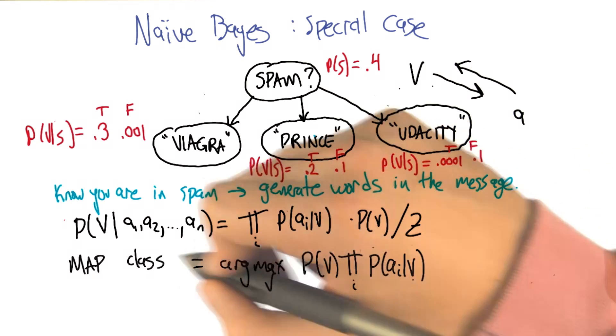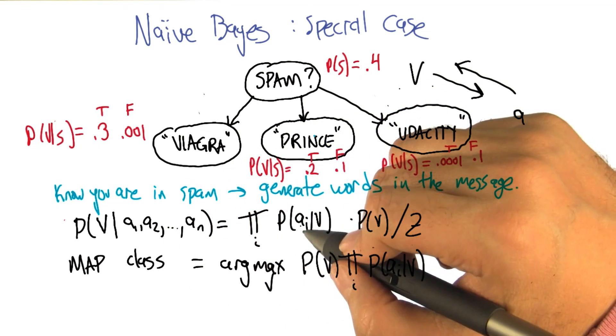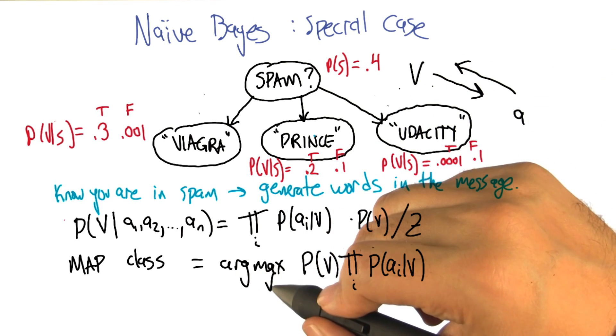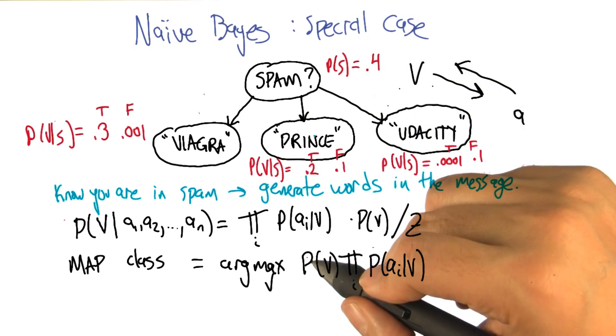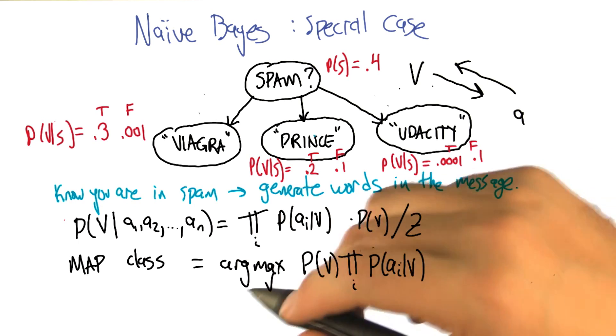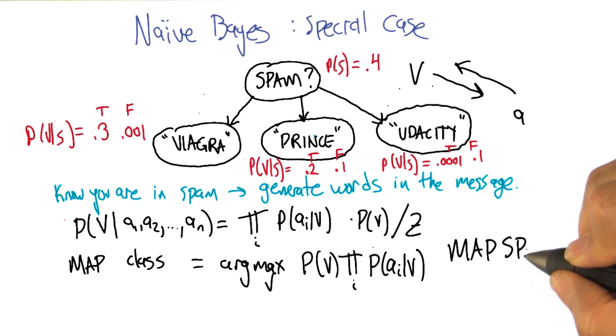Nice. So what's the equation for that? Right, so the maximum a posteriori class, if you're just trying to figure out what's the most likely class given the data that you've seen, you can just take an argmax over all the different possible values of that root node of its probability times the product of all the attribute values given that class. So this would actually let us, if you've been paying attention, we could, in this particular case, compute map spam, which is a palindrome. Wow. That is spectacular. You did not see that coming, did you? No, I did not.